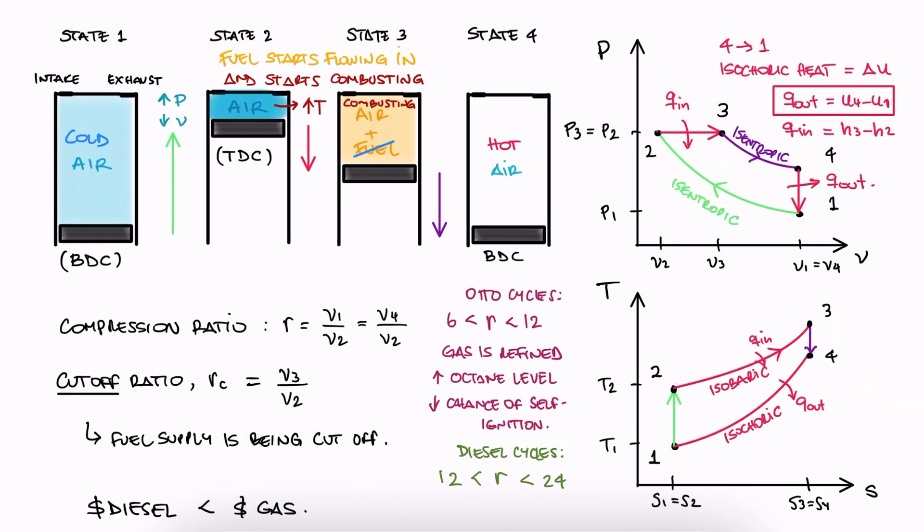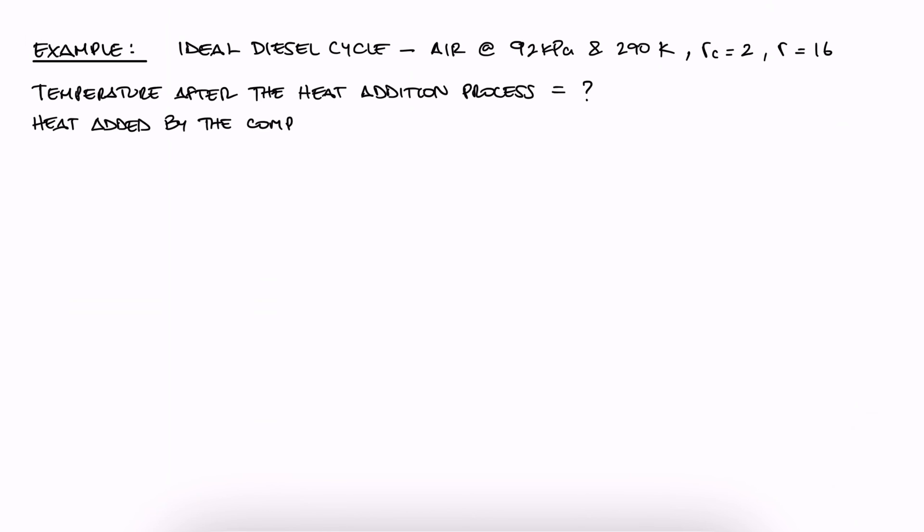Let's look at a short example where we use cutoff ratios and the main differences for diesel cycles, and if you want to watch other more complex examples on diesel cycles, make sure to check out the links in the description of this video. An ideal diesel cycle takes air at 92 kPa and 290 Kelvin and has a cutoff ratio of 2 and a compression ratio of 16. What is the temperature after the heat addition process and how much heat is added by the combustion? Pause here and take a minute to think about this before you watch the solution.